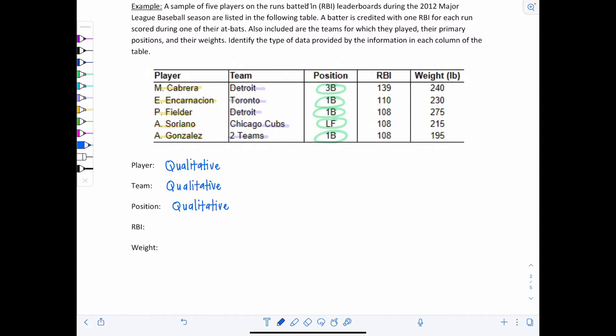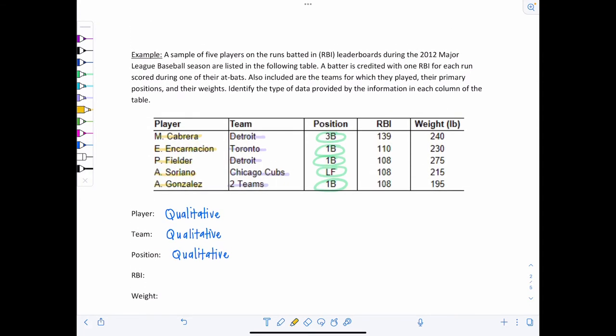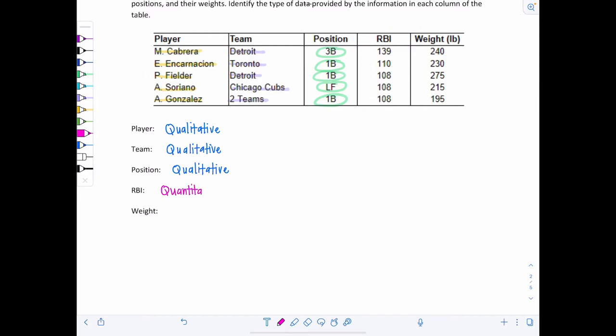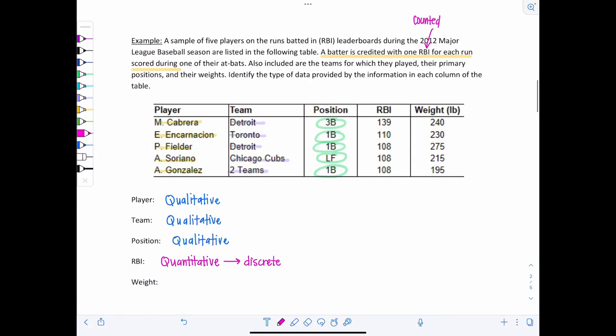And then here, their RBI. So we have to go back to figure out exactly what RBI is and how that data is collected. And right here is the crux of the categorization. A batter is credited with one RBI for each run scored. So every time they score a run at one of their at-bats, they're credited with one RBI. So this statistic, this variable is counted. You're counting one RBI for each run score. So one, two, three, four. So if it's counted, obviously it's numerical data. So it's quantitative. And if it's counted, then it is discrete.